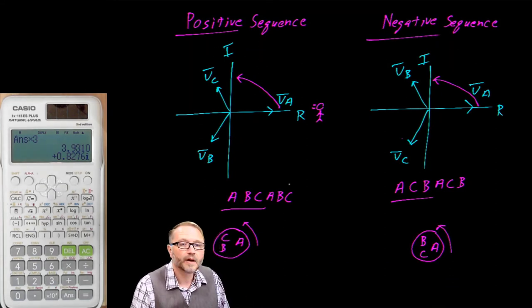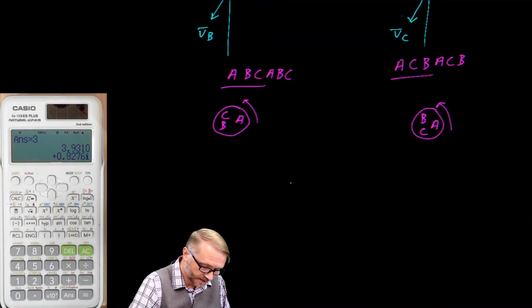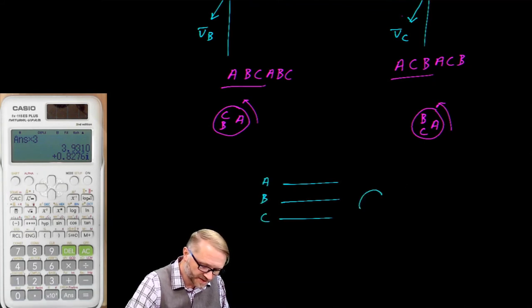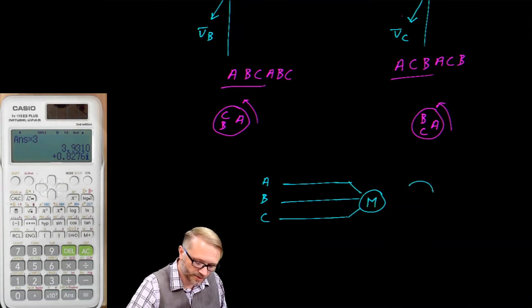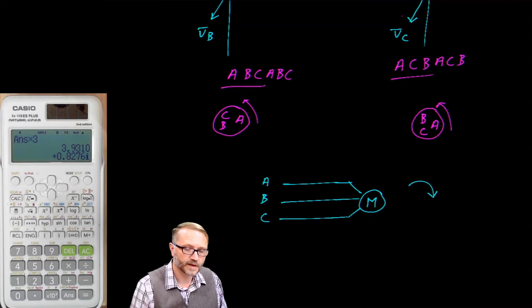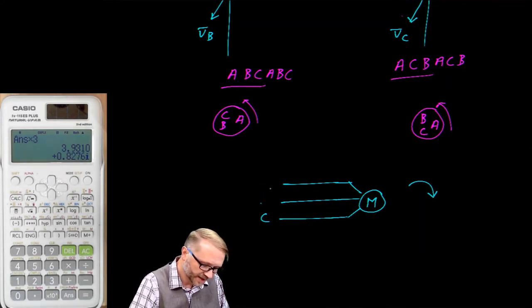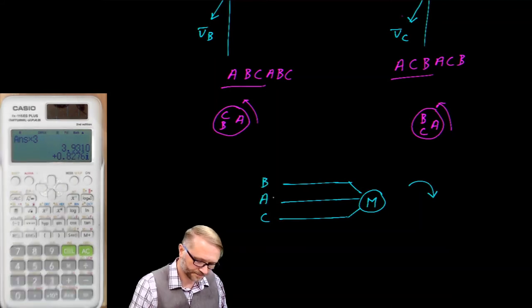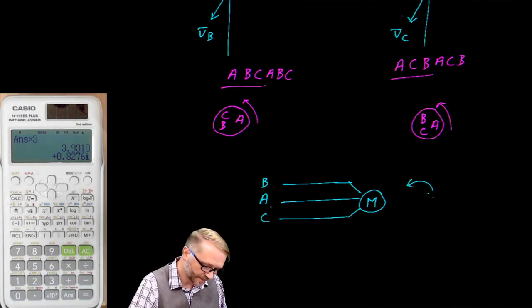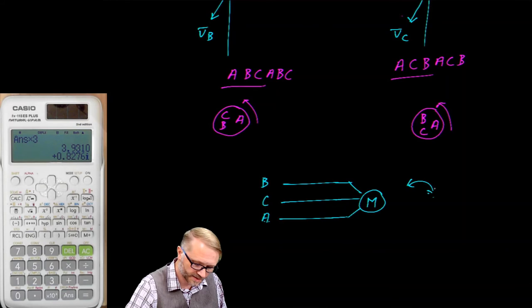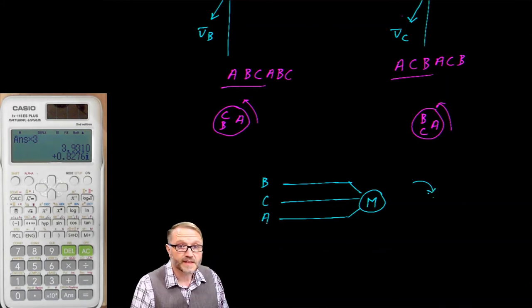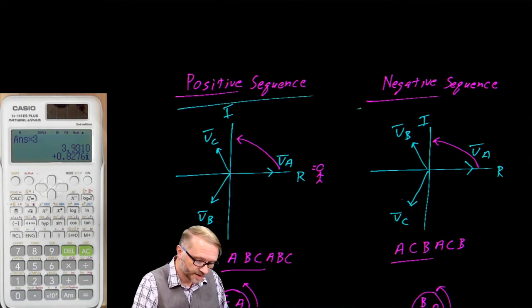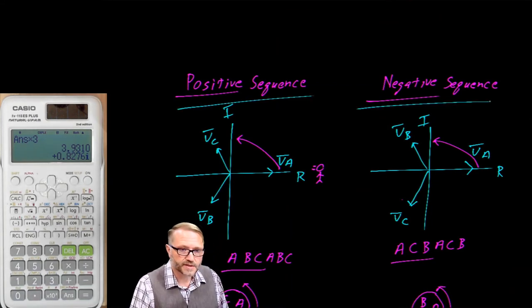With a positive ABC sequence, the motor turns in a clockwise direction. However, if you reverse any two wires, you change the sequence to ACB, and the motor turns in the opposite direction. Swap any two wires again, and it changes back. The order of the phases — the phase sequence — directly determines the direction of rotation of a motor.